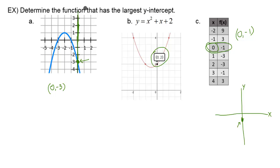And then our question is asking to determine the function that has the largest y-intercept. So which y-intercept is the highest on the coordinate system? It looks like it's going to be B right here because it's happening at 0, 2. This one right here is negative, and this one right here is negative as well. So we'll go with B.